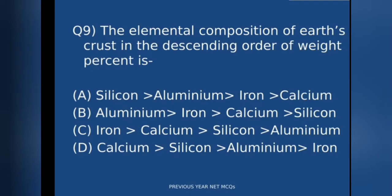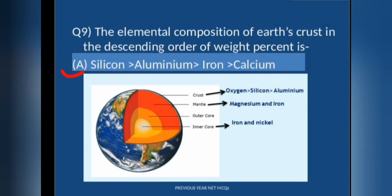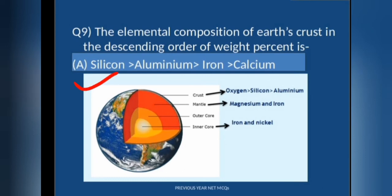Question 9: the elemental composition of Earth's crust in descending order of weight percentage. The correct option is A. Silicon is present in the maximum quantity in Earth's crust, followed by aluminium, then iron and calcium. Since oxygen was not given as an option, priority goes to silicon, then aluminium, then iron, then calcium. The mantle is made up of magnesium and iron, while the core has the highest percentage of iron followed by nickel.